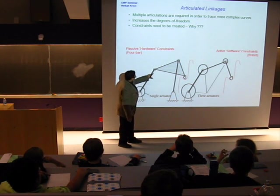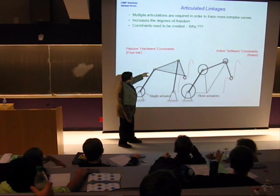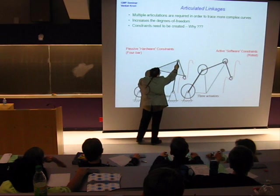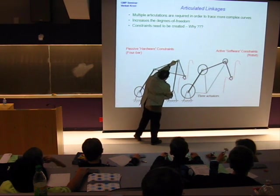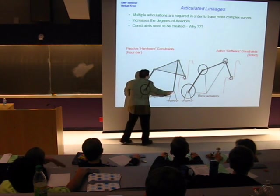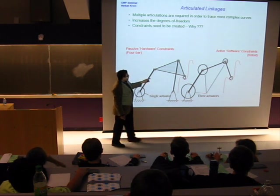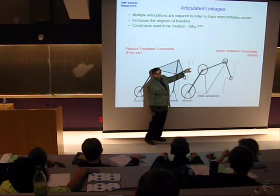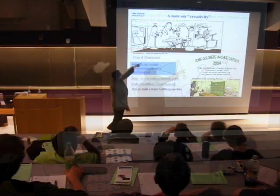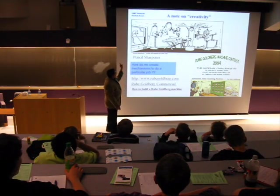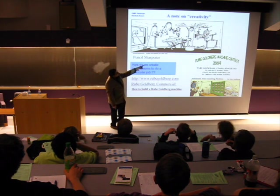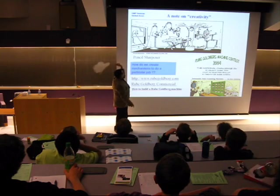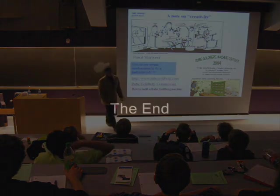In this mechanism, what happens is by selecting the length of this link, the length of this link, the length of this link, and the length of this base link, you can control what type of motion this thing works. Guess what this car thing is called? Somewhere at the other end, you're trying to sharpen the pencil. You can build together a very elaborate system.